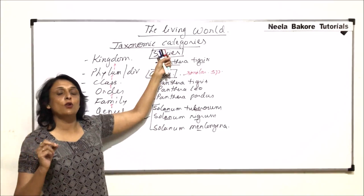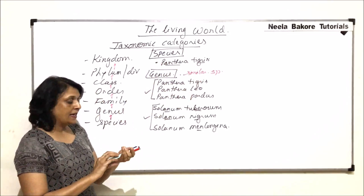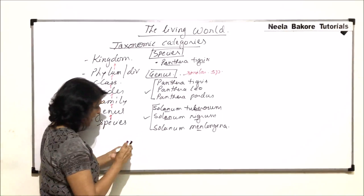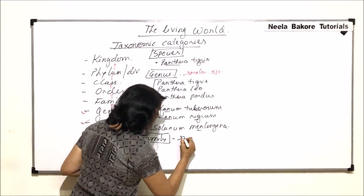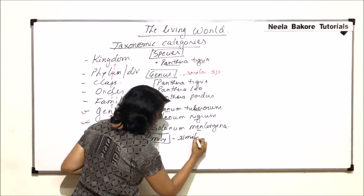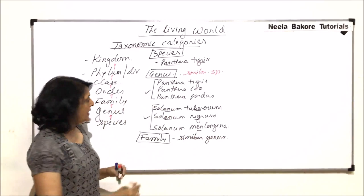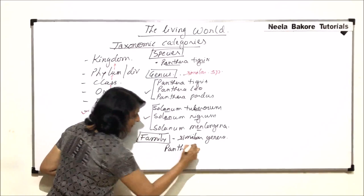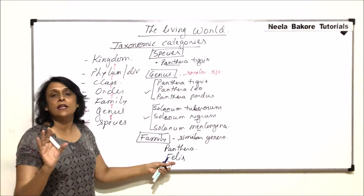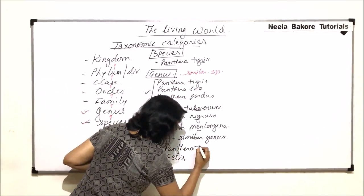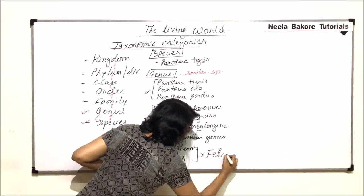So, a species is a group of organisms which are very closely related, and similar species are placed in one genus. Now let us move to the next category, that is family. When we talk of family, we mean that similar genera are kept in one family. For example, Panthera is a genus, and Felis is also a genus — in Felis we put the domestic and smaller cats. These two genera together are placed in one family, that is Felidae.